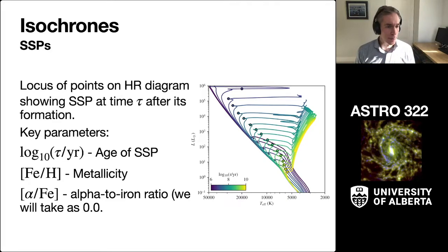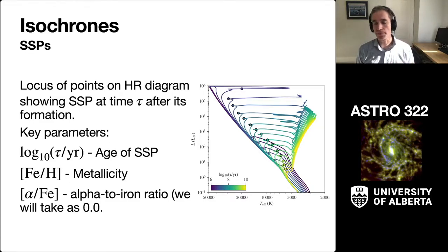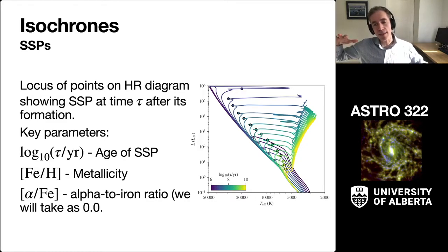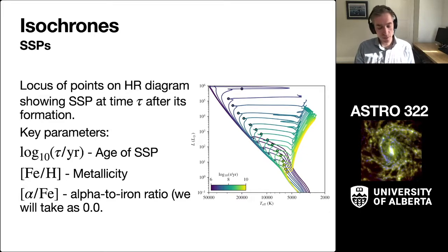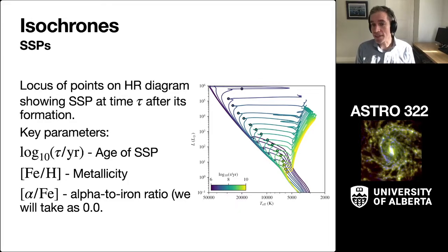The other things we see are the metallicity and the alpha-to-iron ratio for the stars, using this bracket notation. Fe on H, as I'll often call it, is just a representation of how many heavy elements there are relative to hydrogen, normalized to the solar value on a logarithmic scale. So zero corresponds to solar metallicity, negative numbers are sub-solar, and positive numbers are metal-enriched relative to solar. The alpha over Fe is controlling the relative abundance of alpha process elements — carbon, oxygen, neon — relative to iron peak elements like iron and silicon. We'll take this as zero, meaning we lock it to the solar value.